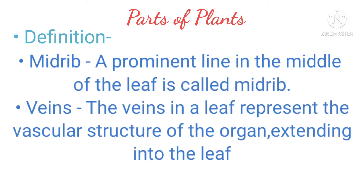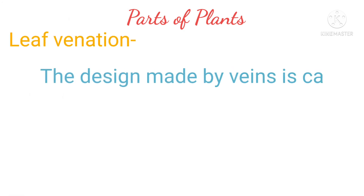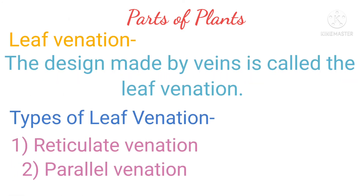A prominent line in the middle of the leaf is called the midrib. The veins in the leaf represent the vascular structure of the organ extending into the leaf. The design made by veins is called leaf venation. Types of leaf venation: reticular venation and parallel venation.